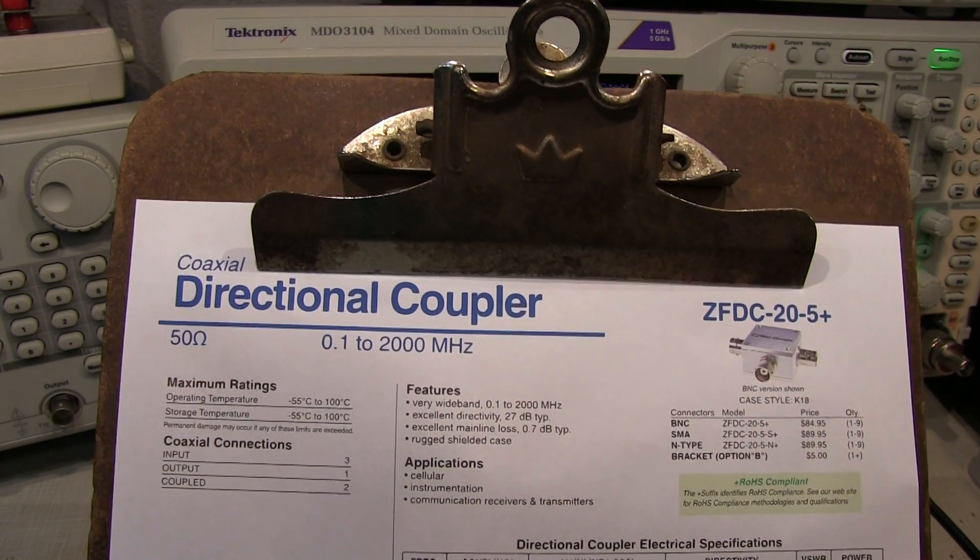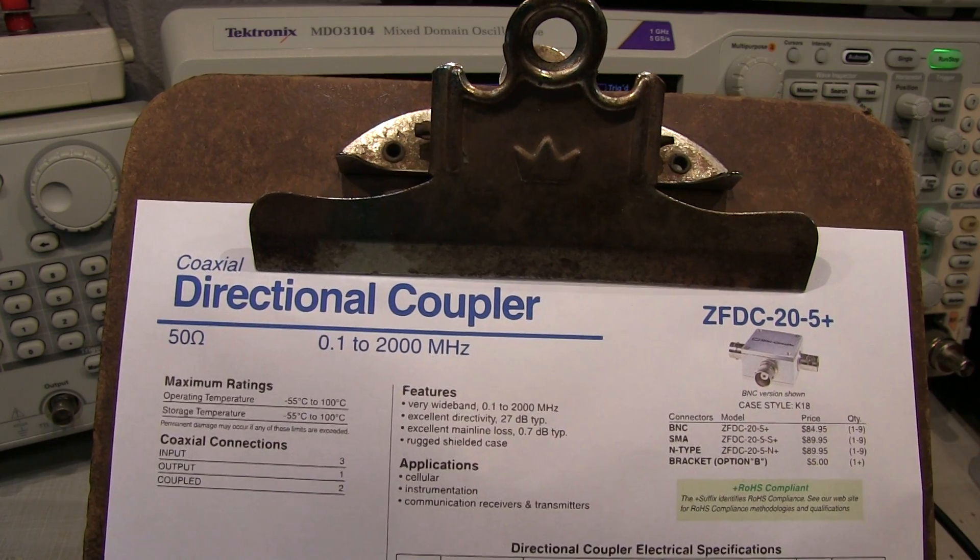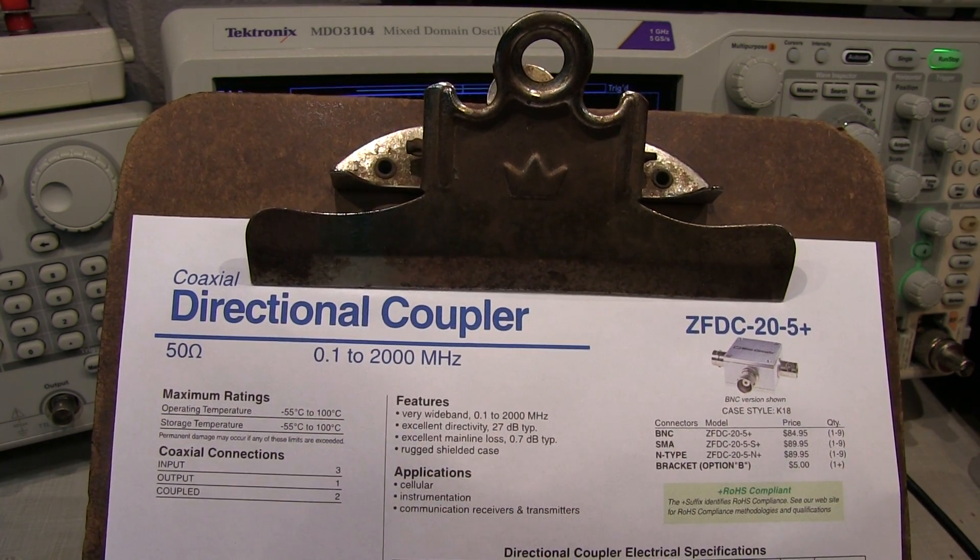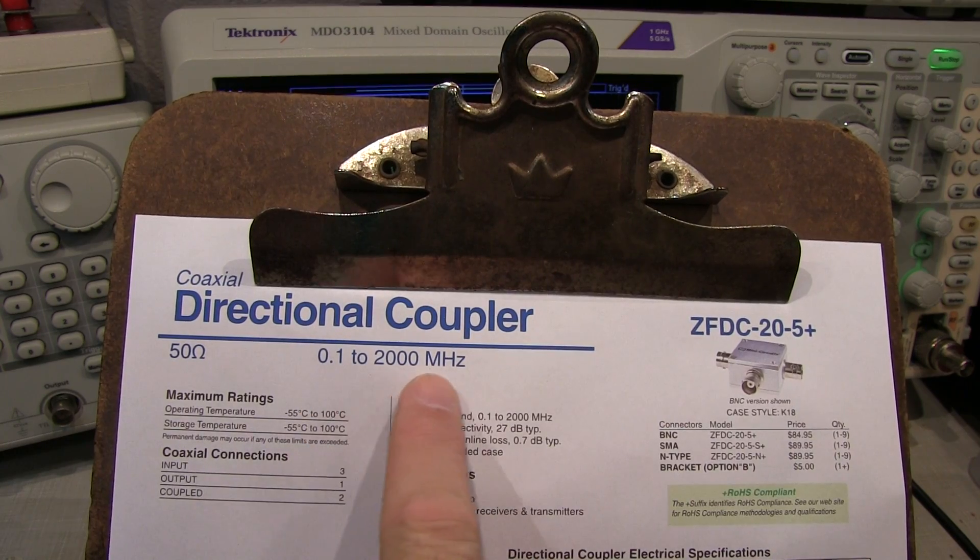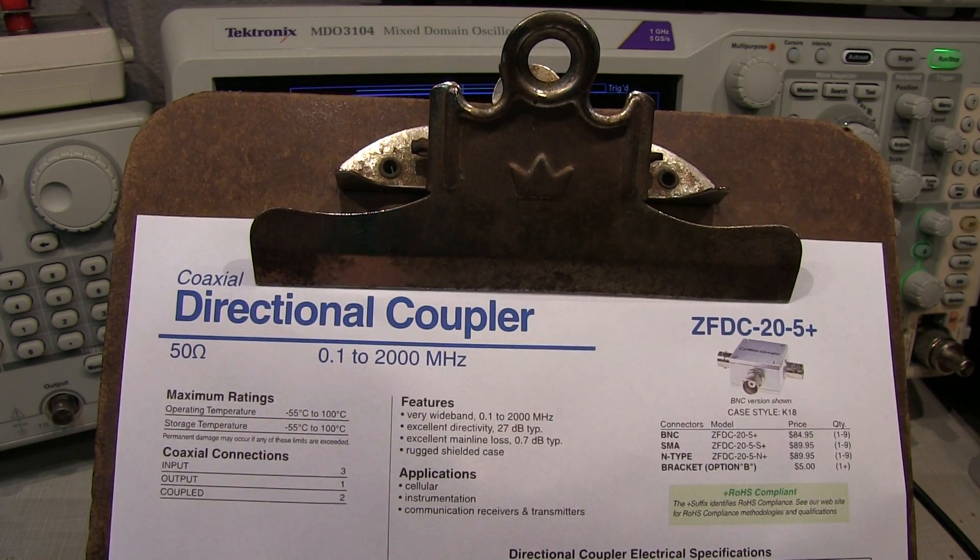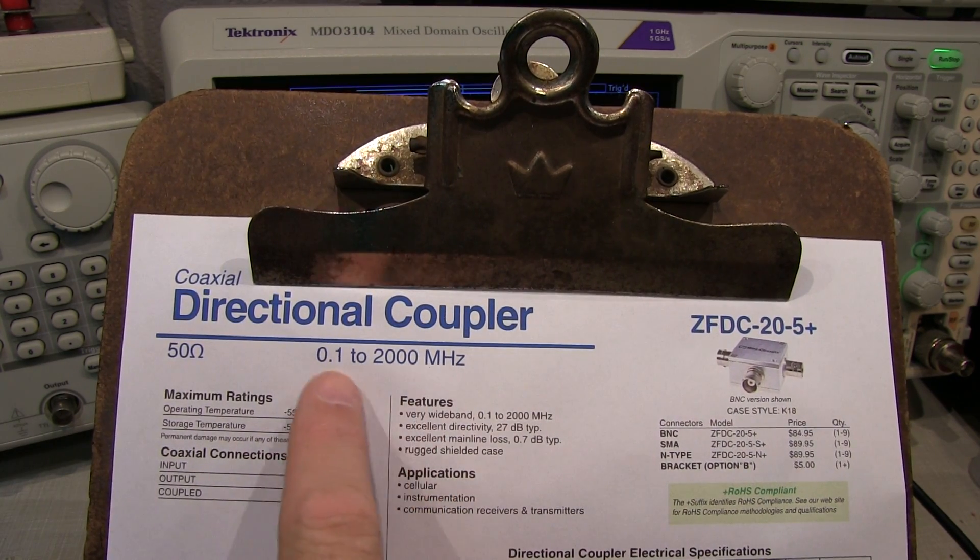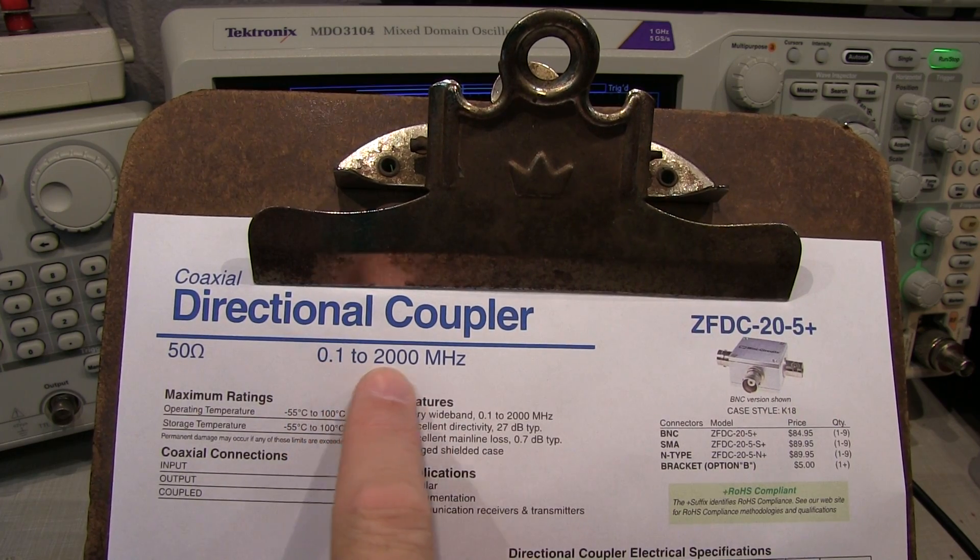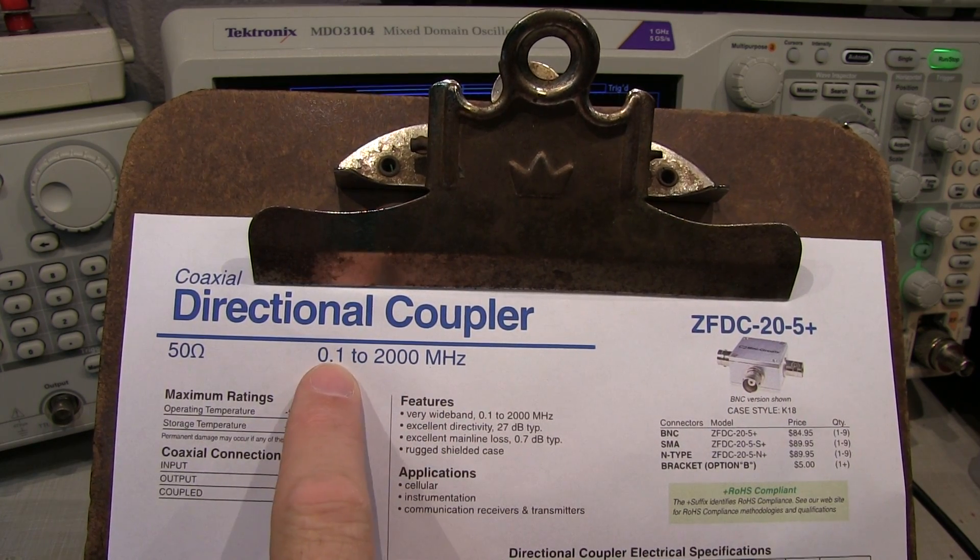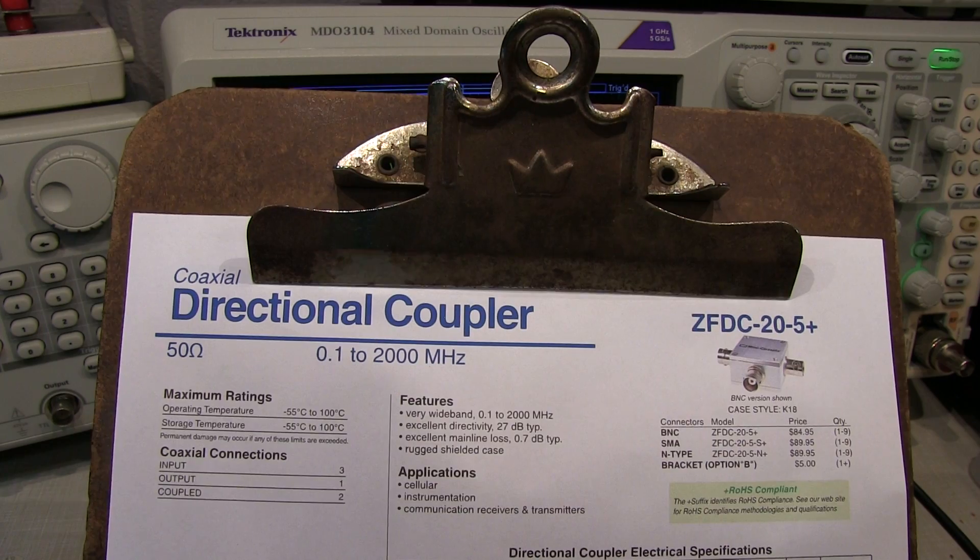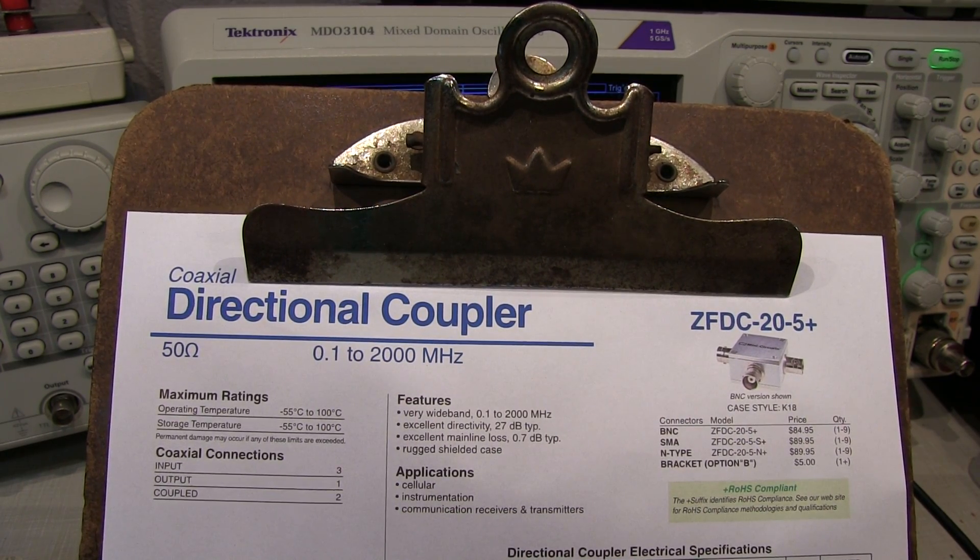All directional couplers, whether they're made from coupled strip lines or RF transformers, will always have a usable frequency range, and that will usually be printed prominently on the device or certainly listed in the datasheet. This particular device is rated from 100 kilohertz out to 2 gigahertz. So it's a pretty nice broadband directional coupler.